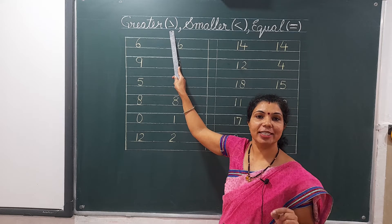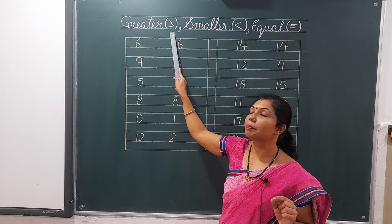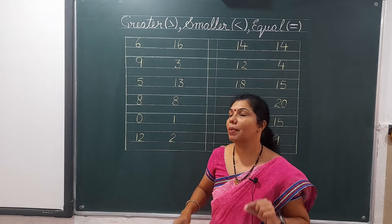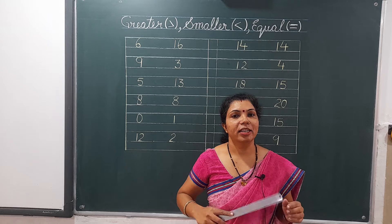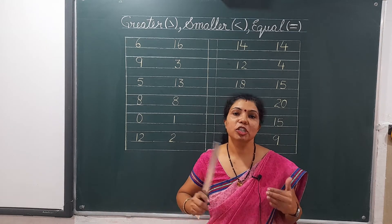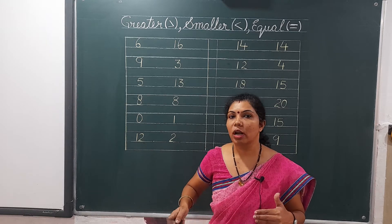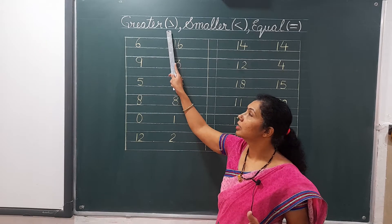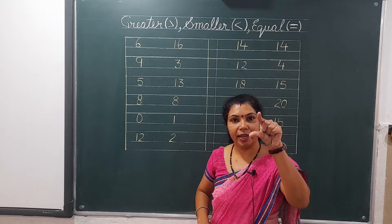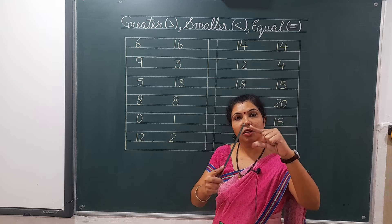This sign is just like a bird's beak. Bird ka chonch ke saman hai. Jab hum greater ka comparison karayenge, toh jo number bada hoga, uske taraf greater ka sign use karayenge. Yani bird ka jo peak hai, woh khula rahega. Greater ke liye yeh jo mouth hai, yeh open rahega.